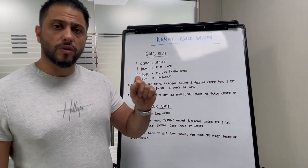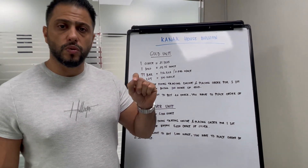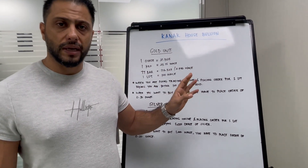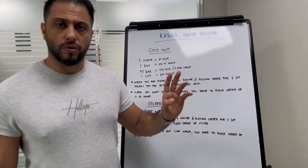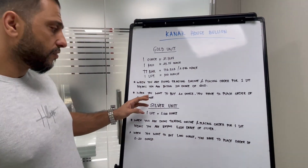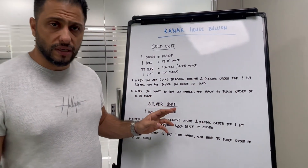you have to place 0.20, and you will get only 20 ounces. Now for silver units: